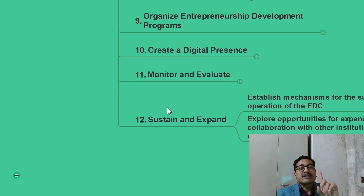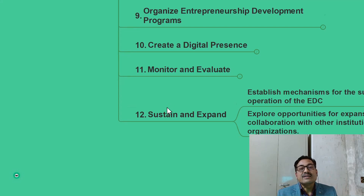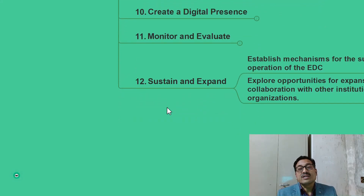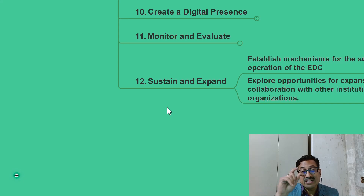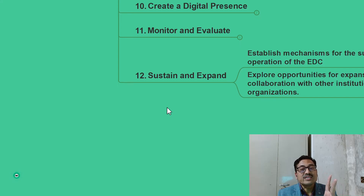Step 10 is to create a digital presence. If you have not made your branding in the digital space, you will not be successful. Create a digital presence for your EDC, your institution, and personally — and encourage students who are coming as innovators and aspiring entrepreneurs to start branding themselves as experts in their particular niche from today itself. Step 11 is to monitor and evaluate. Step 12 is to sustain and expand.